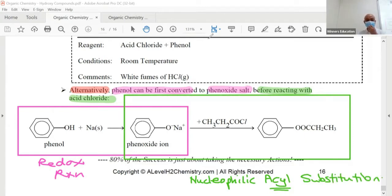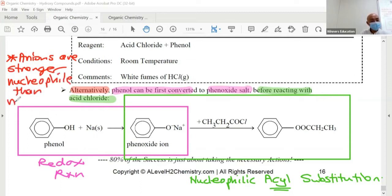But why would they want to do this? Let me give you the answer right. Why would they want to do a two-step rather than one step? Simply because, ladies and gentlemen, remember that anions are better. And anions are stronger nucleophiles. This is a nucleophilic reaction, isn't it, than the neutral molecule.